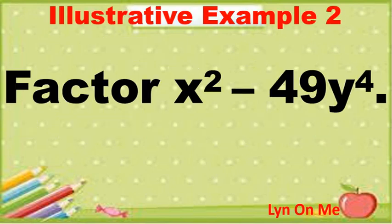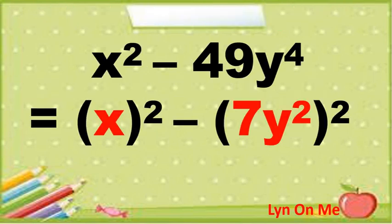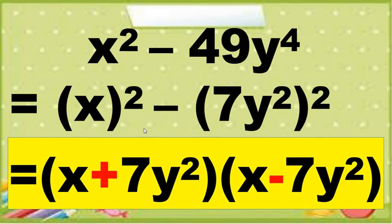Let us have another example. Factor x squared minus 49y raised to 4. First step: express each term as a square of a monomial. So x squared minus 49y raised to 4 equals the square of x minus the square of 7y squared. Then write as a product of the sum and difference of two terms, and check your factors using the FOIL method.